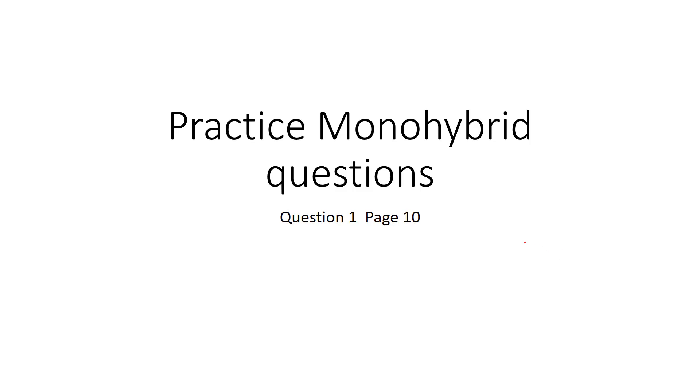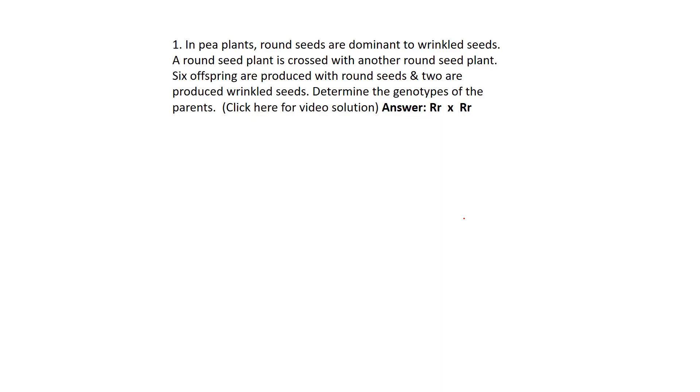Okay, practice monohybrid question 1, page 10. These questions are a little bit different, but we're going to show that as we progress through it. In a test environment, you won't know what type of question you get until you start analyzing it. It says pea plants round seed.